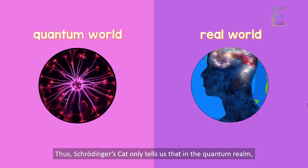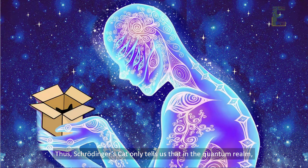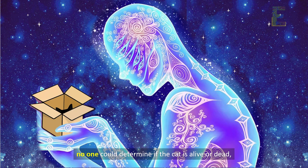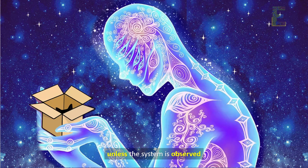Thus, Schrödinger's cat only tells us that in the quantum realm, no one could determine if the cat is alive or dead unless the system is observed.